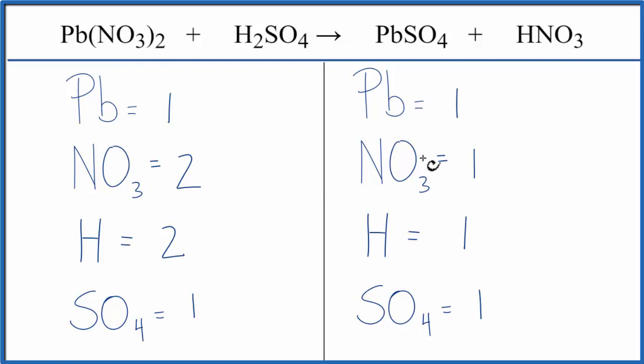Let's balance the nitrates first, because we could just put a coefficient of 2 in front of the nitric acid. That means 1 nitrate times 2, that'll give us 2 of those. And then 1 hydrogen times 2, that'll give us 2 hydrogens.